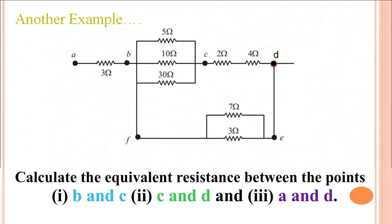The next problem involves a more complex circuit with multiple series and parallel combinations. The circuit has several labeled points: A, B, C, D, E, and we need to calculate the equivalent resistance between different points. Working through combinations systematically is key.